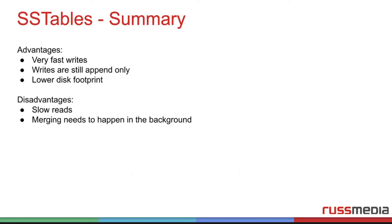Advantages of SS tables: they have very fast writes because it's still append-only and all the same stuff from hash indexes. We have a lower disk footprint because we can compress the blocks. We have not slow reads, but slower reads than hash indexes because we need to scan a file first and load it into memory. And the merging needs to happen in the background, which can be quite a performance hit if it happens at the wrong time.